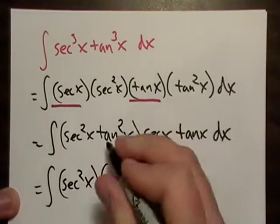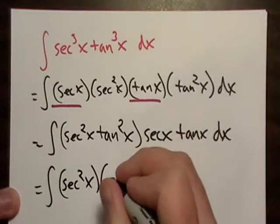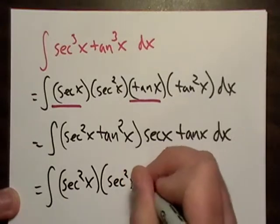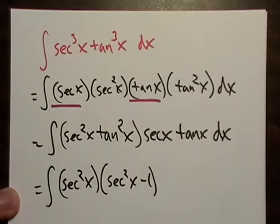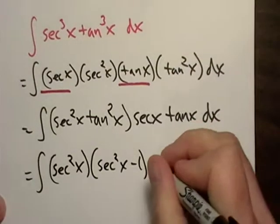And tangent is just secant squared minus one. And I have a video on trig identities that's really good for all these.